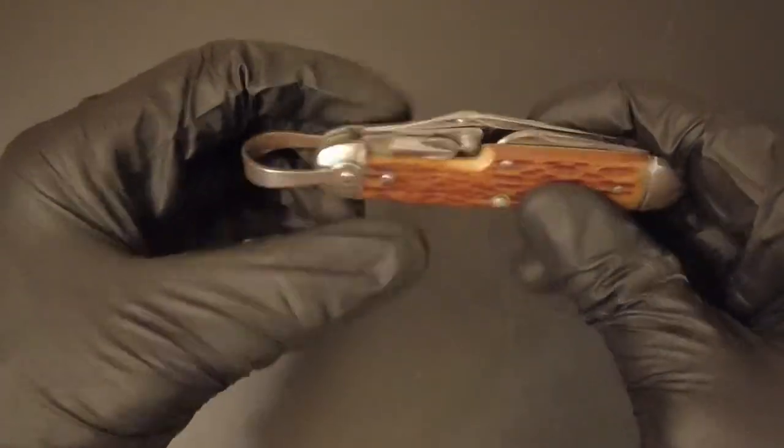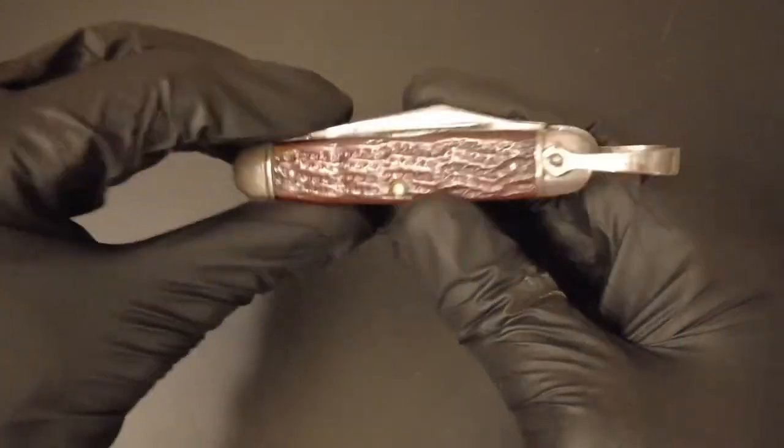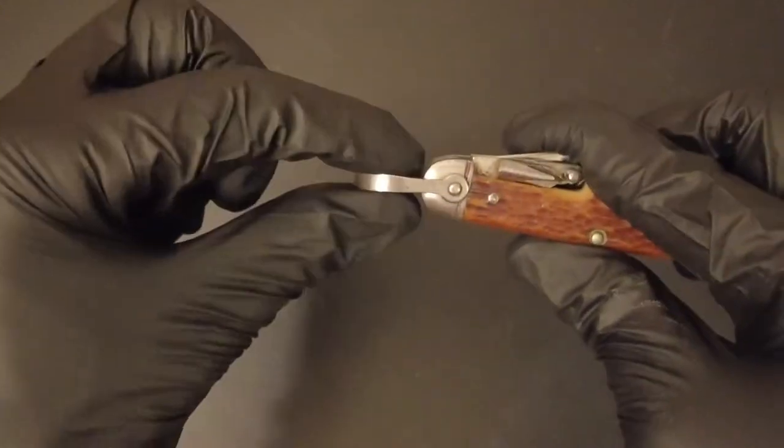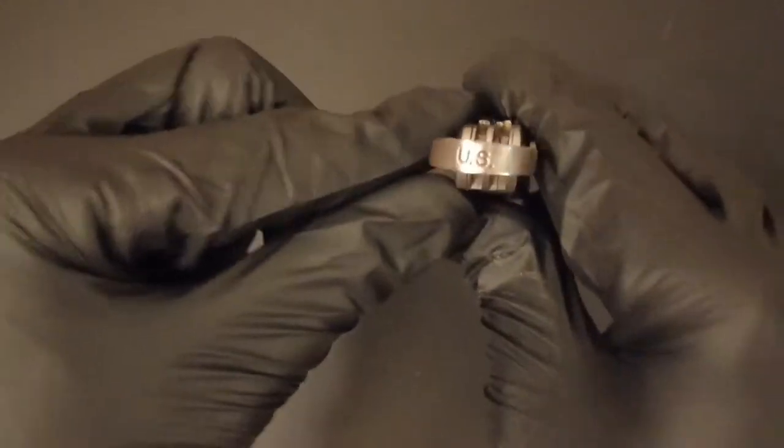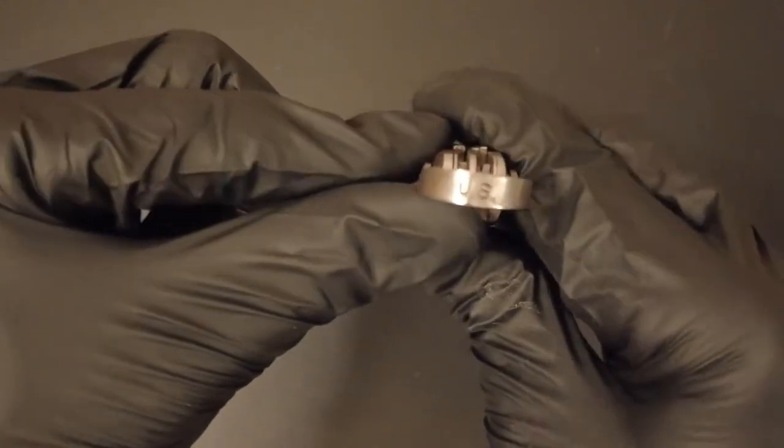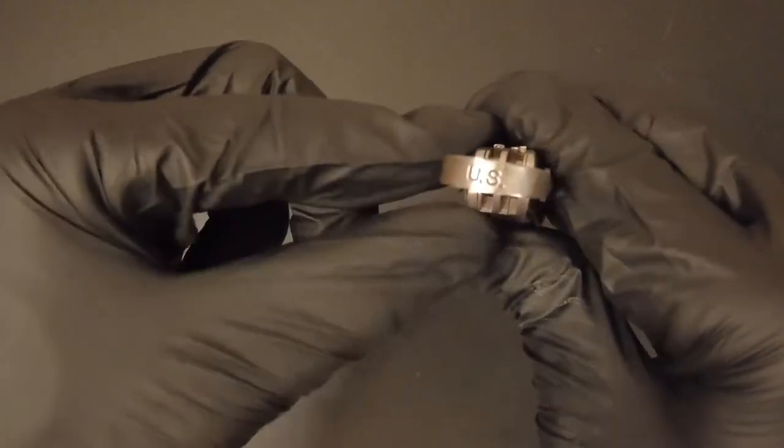Besides the little screwdriver, another huge identifying factor of these knives is going to be this fat bail here. You'll see that on a lot of scout knives or lineman's knives, but this one's interesting because it's actually got US impressed or stamped into the bail itself. I believe that the second and third iterations of these knives have US in the bail.